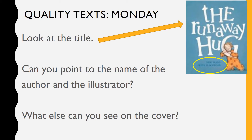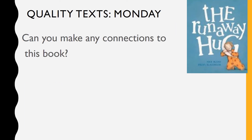What else can you notice about the cover? Maybe you can tell someone in your family what you notice about the cover. Can you make any connections to this book? The author is Nick Bland. You might remember we read another Nick Bland book late last term when you were learning from home — it was called The Wrong Book. Nick Bland has written many, many children's books. So you might be able to find some other ones on Storybox Library or on YouTube, and when we get back to the school library, you might be able to find some other Nick Bland books there.